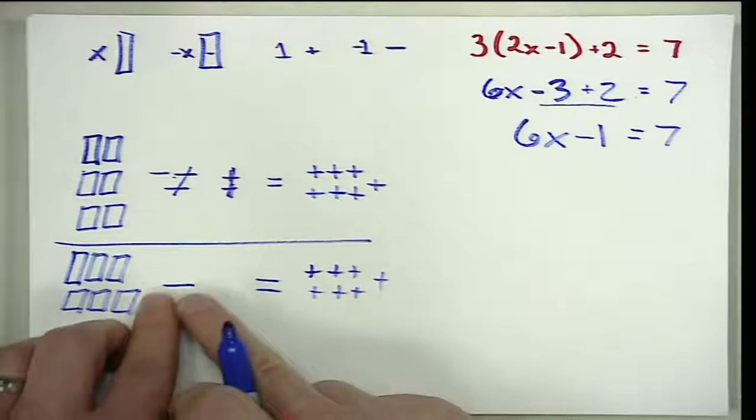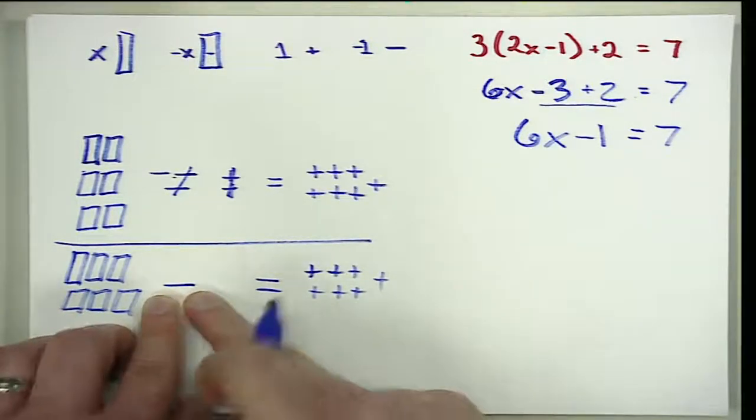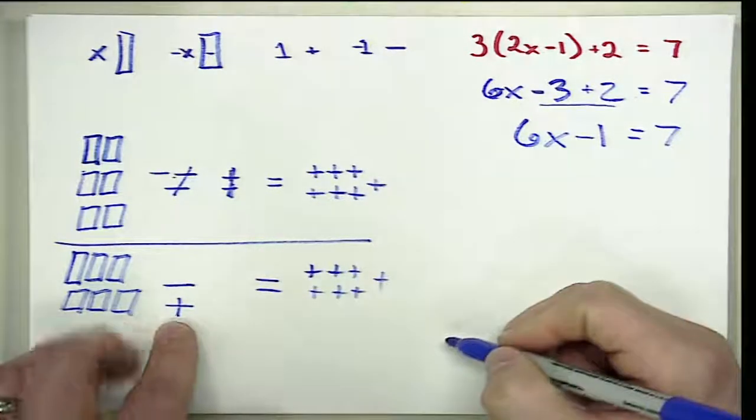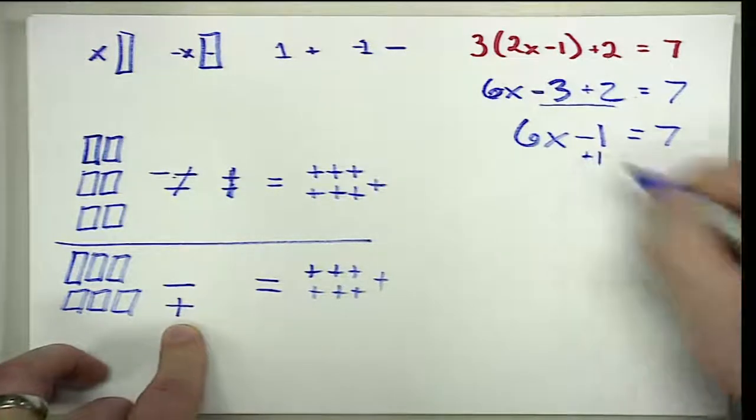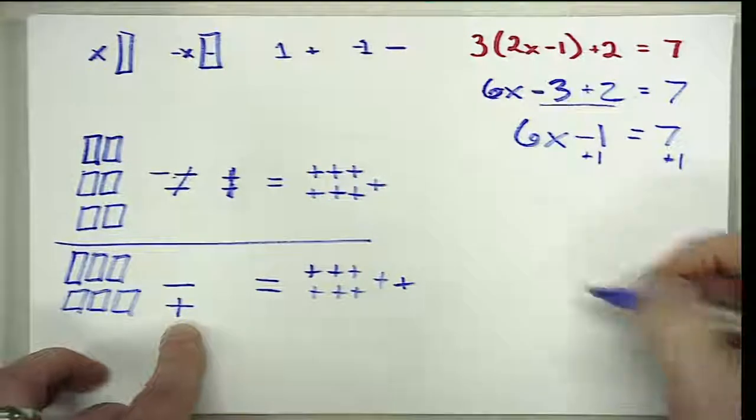Now you recall to remove this negative one from this side, we're going to make a zero pair, and the way that we do that is by making that zero pair and adding that positive one. If we add that positive one to this side, we have to add a positive one to the other side.